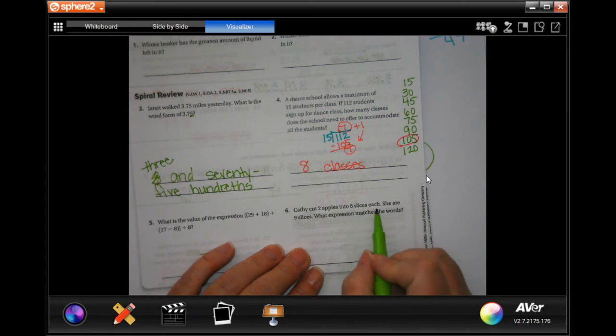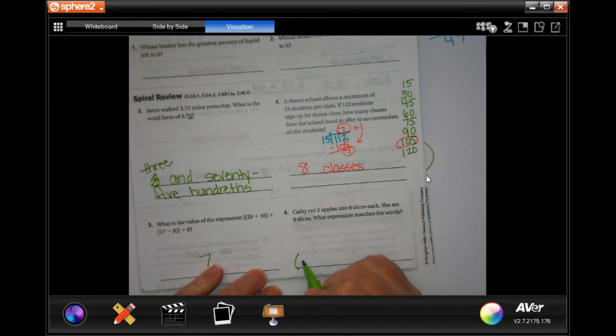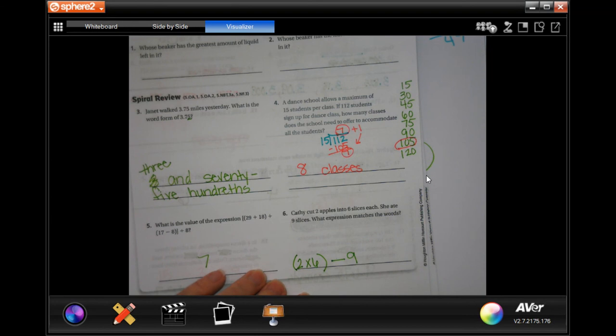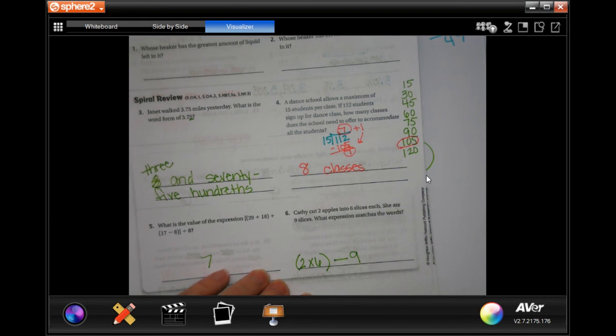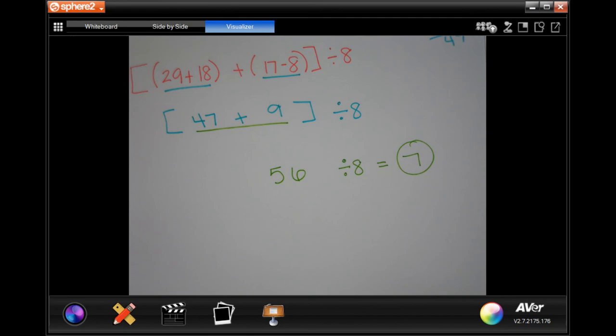Kathy cut 2 apples into 6 slices. She ate 9 slices. What expression matches the words? So, she cut 2 apples into 6 pieces. She then ate 9 slices. That's the expression that matches the words. All right, guys. Thanks for hanging out for 3.3. Come on back for 3.4 soon. See you soon.